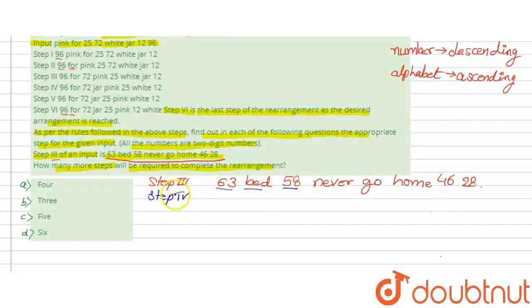Step 4 will be: 63 bad 58, then alphabetically 'go', so 58 go, then the rest as it is: never home 46 and 28.